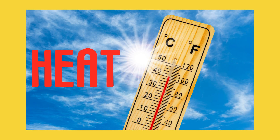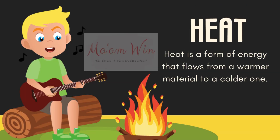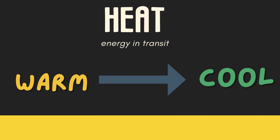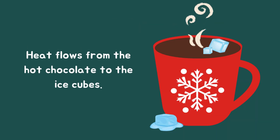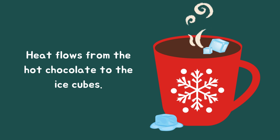Now let us discuss heat in physics. The energy that transfers from one object to another because of the temperature difference between them is called heat. Heat is energy in transit, moving from a body of higher temperature to one of lower temperature. The direction of a spontaneous energy transfer always goes from a warmer to a cooler substance. When two substances of different temperatures are in thermal contact, heat flows from the higher temperature substance into the lower temperature substance. For example, when you mix hot chocolate with ice cubes, the chocolate drink cools down and the ice cubes warm up and melt — heat flows from the hot chocolate to the ice cube.